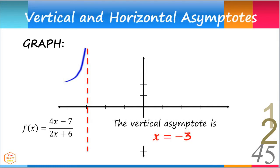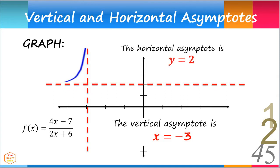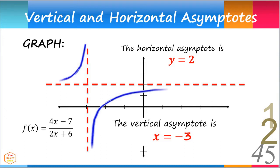For this function, we have previously solved for the horizontal asymptote, which is y equals 2. We can now show the whole curve: it runs closer and closer to the vertical asymptote x equals negative 3, as well as to the horizontal asymptote y equals 2, but will never intersect nor touch both lines.